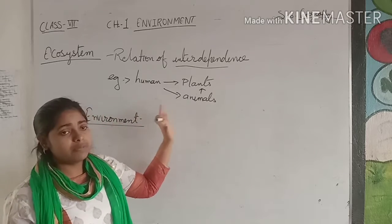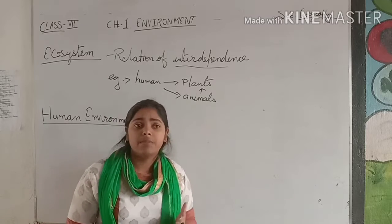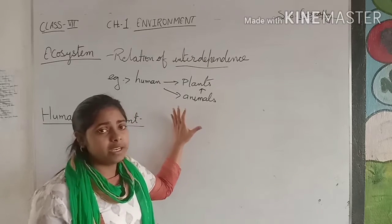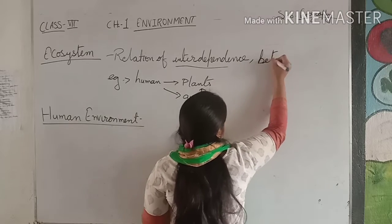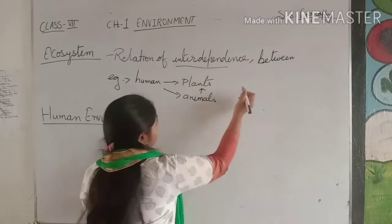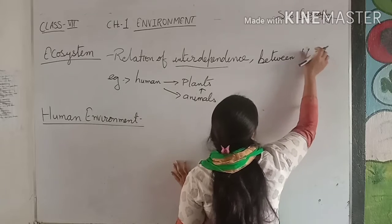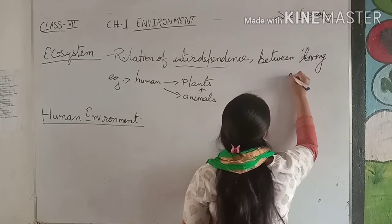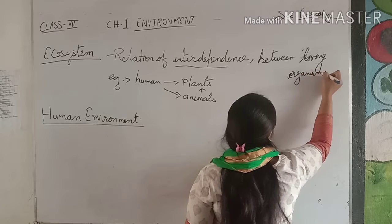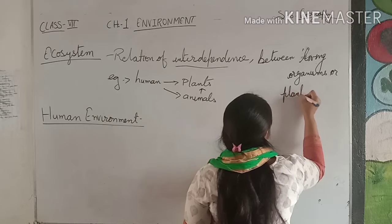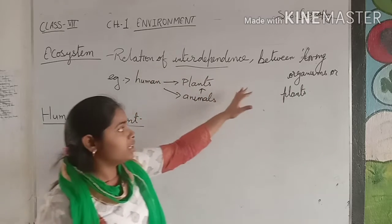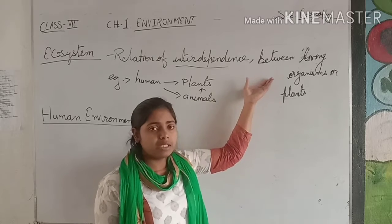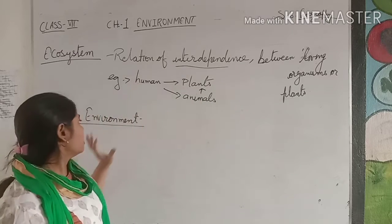Ecosystem is the relation of interdependence — that animals depend on each other. It is an interaction between living organisms, and this interaction involves chemical or physical changes. It is the relation of interdependence between human beings and living organisms or plants.